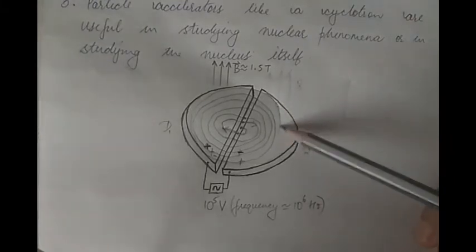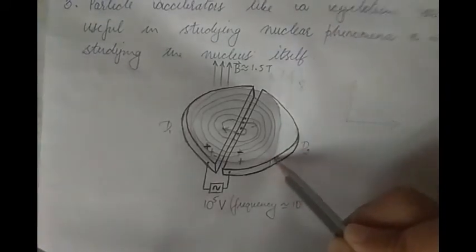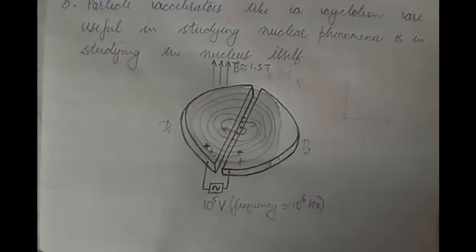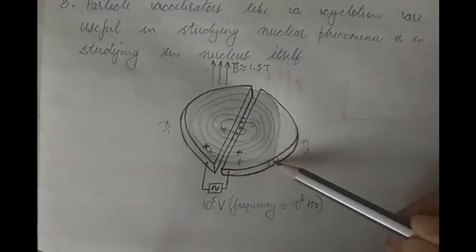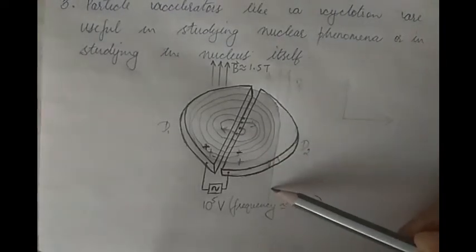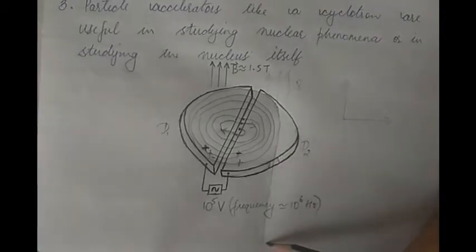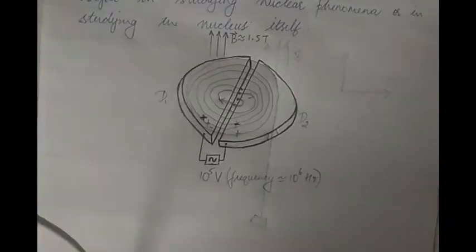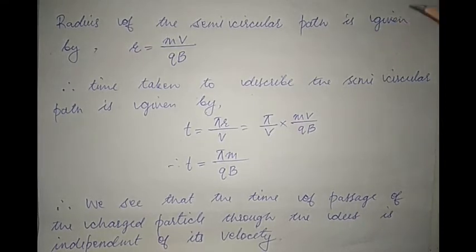Once the charged particle attains the desired velocity, there is an opening — a window of sorts — in the cyclotron. The charged particle comes out through this window, like a projectile, and goes on to hit a desired target. This is how a cyclotron works.